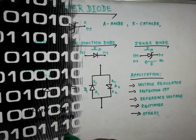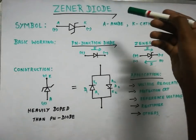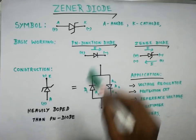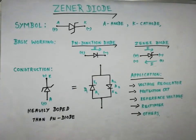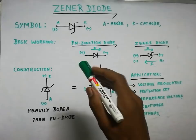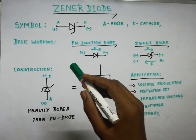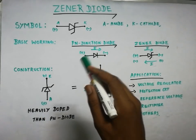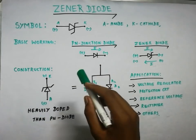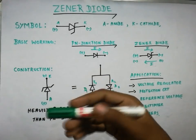Hello guys, what are we going to talk about? The Zener Diode. We are going to talk about the Zener Diode and its full working. In the last video, we talked about the PN Junction Diode. There is a link in the description. Watch that video first, then you will be able to understand this one very well.